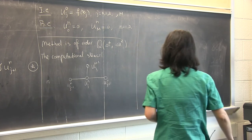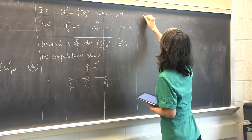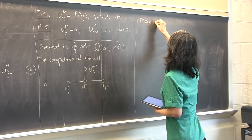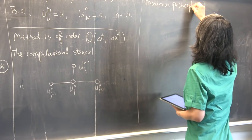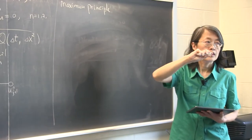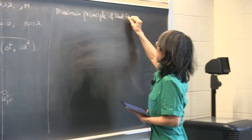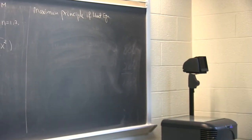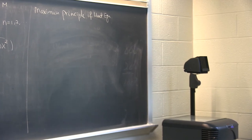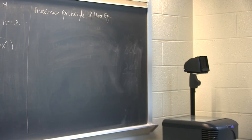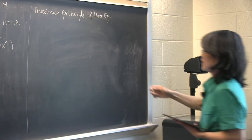There is a little bit of analysis I wish to introduce. For the heat equation, there is a very important property called the maximum principle. I'll state it in connection with the initial and boundary conditions we have. If you have different boundary conditions, it might take a slightly different form.